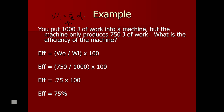Work input equals effort force times effort distance, so the 1,000 joules was calculated by multiplying those two things together. Work output equals resistance force times resistance distance. Hopefully, the resistance force is larger than the effort force; however, the resistance distance might be much less than the effort distance — and that's why the work output might be less than the work input. Efficiency equals work output divided by work input times 100.